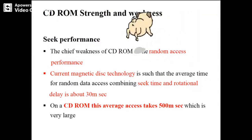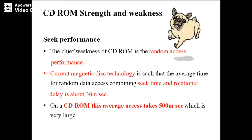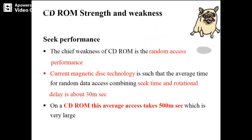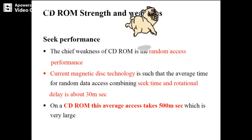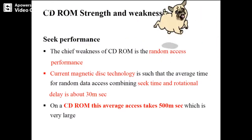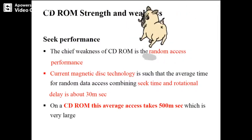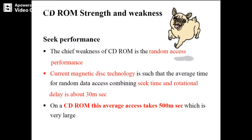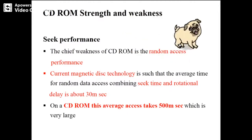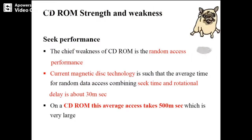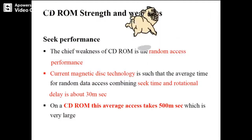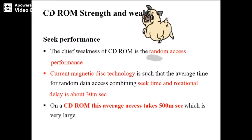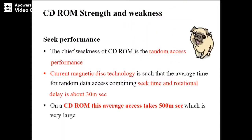Current magnetic disk technology has an average time for random data access — combining seek time and rotational delay — of 30 milliseconds. But for CD-ROM, this average access time is 500 milliseconds, which is very large. Compared to magnetic disk technology, seek performance is a clear weakness of CD-ROM.